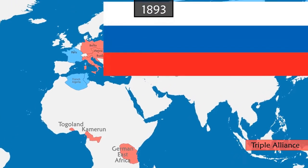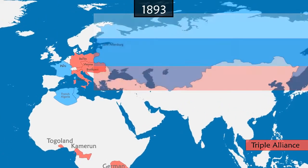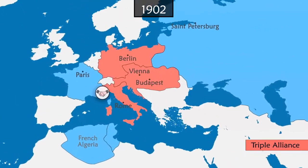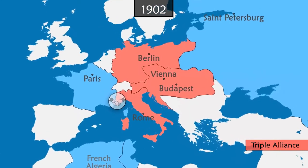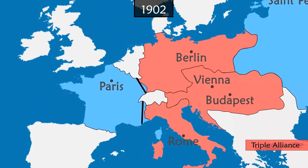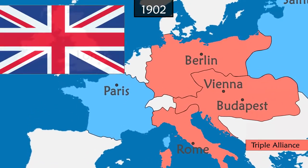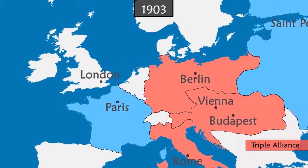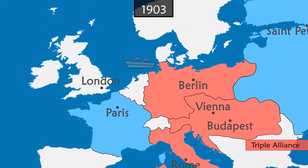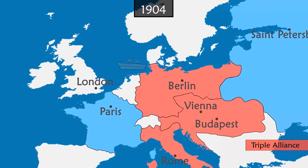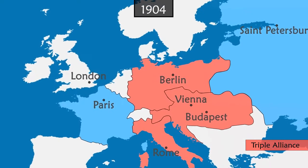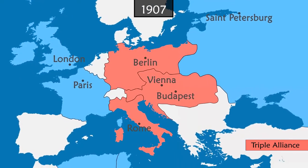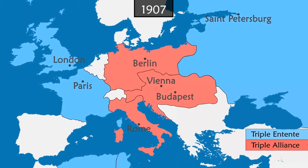France allies with the Russian Empire and signs a secret pact of non-aggression with Italy, thus avoiding a second front in case of war. The British Empire fears the rise of the German army, more specifically of its navy. Britain comes out of isolation, moves closer to France and then to Russia. Together they form the Triple Entente.